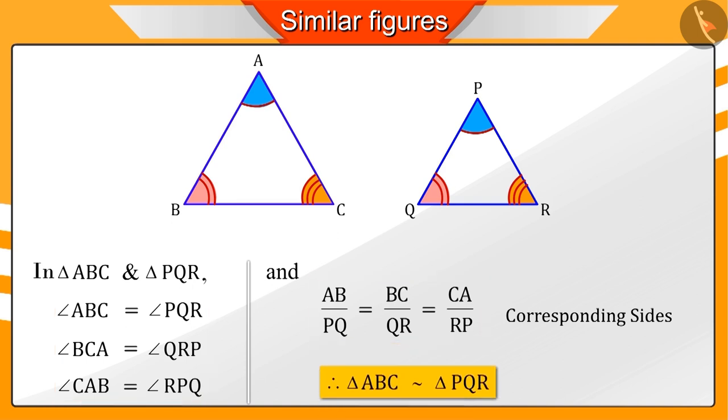Hence, these two triangles will be similar. We represent the similarity between two polygons by this symbol.